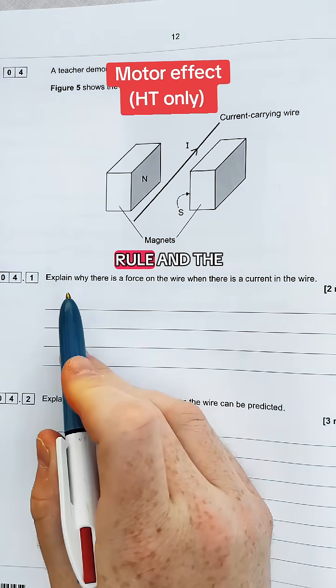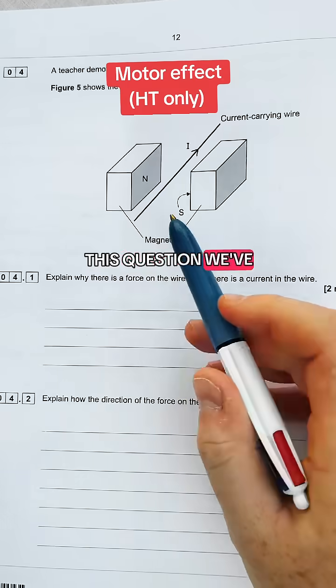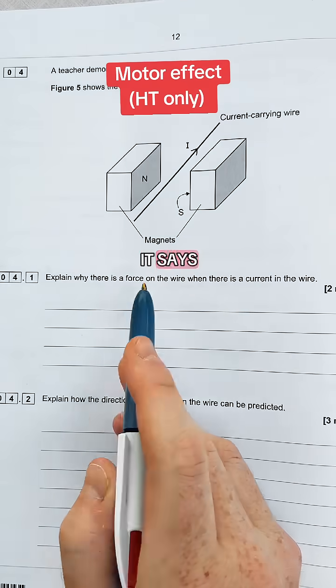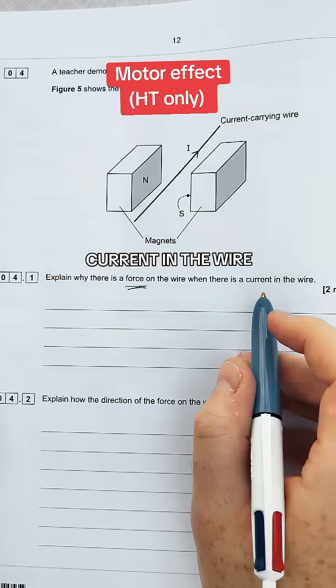Let's talk about Fleming's left hand rule and the motor effect. This question we've got a current carrying wire in between two magnetic poles. It says explain why there is a force on the wire when there's a current in the wire.